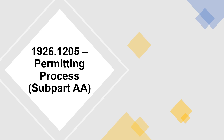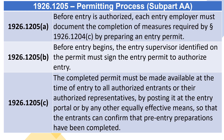1926.1205, Permitting process, subpart A. Before entry is authorized, each entry employer must document the completion of measures required by section 1926.1204(C) by preparing an entry permit.